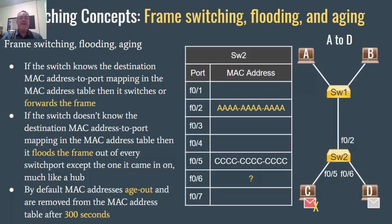The frame was not intended for host C, so host C drops the frame. Host D will get the frame and notice that it was addressed to its MAC address, so D will process the frame and C will discard the frame.